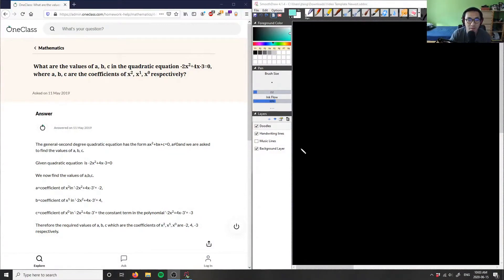All right, our first problem here is asking us what are the values of a, b, c in the quadratic equation negative 2x squared plus 4x minus 3 equals 0, where a, b, c are the coefficients of x squared, x to the power of 1, and x to the power of 0, respectively.